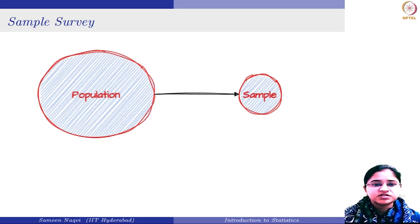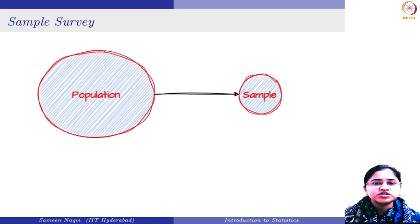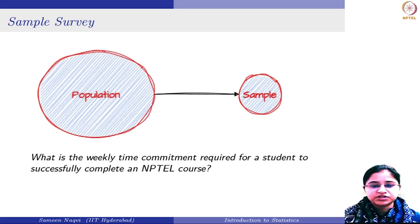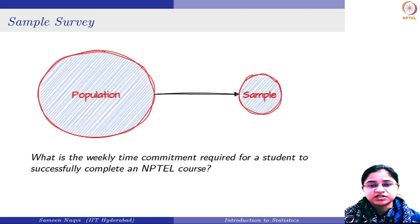First, let us understand the concept of population and sample. Population is basically the entire set of individuals or objects in which we are interested. For instance, if you want to determine what is the weekly time commitment required for a student to successfully complete an NPTEL course, the population is basically all the students who have registered in the NPTEL course. You will not be focusing on any other student who has not registered.